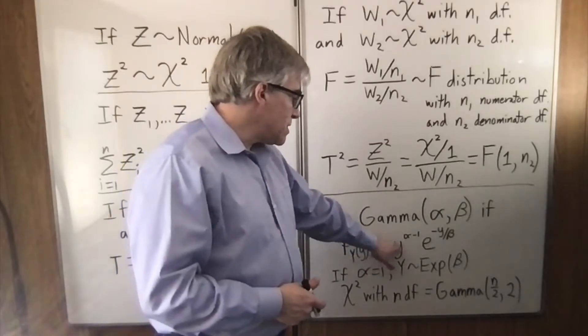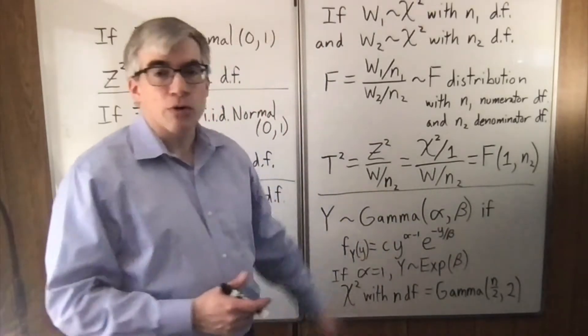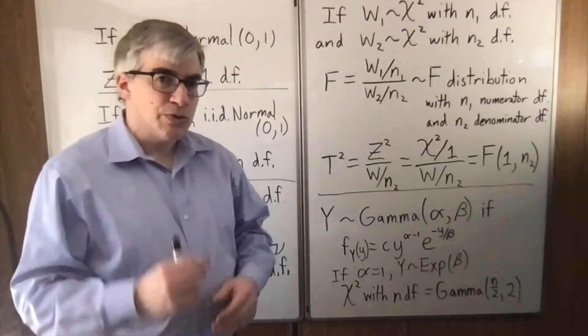And the density is y to the alpha minus 1, e to the minus y over beta, times a normalizing constant. There are two important special cases.